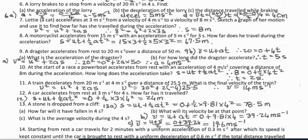Question 8: a motorcyclist accelerates from 15 meters per second with an acceleration of 5 meters per second squared for 3 seconds — how far does he travel during the acceleration? Using s = ut + ½at²: 15 times 3 plus ½ times 5 times 3² equals 67.5 meters.